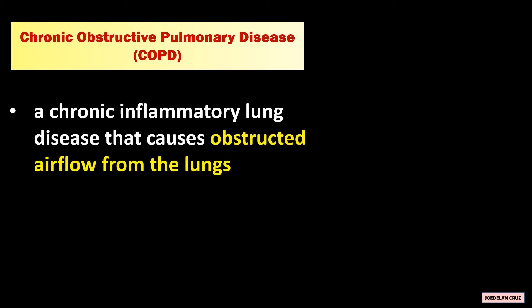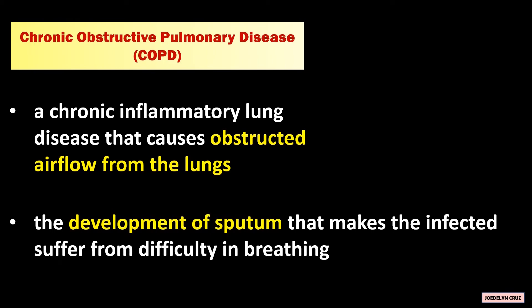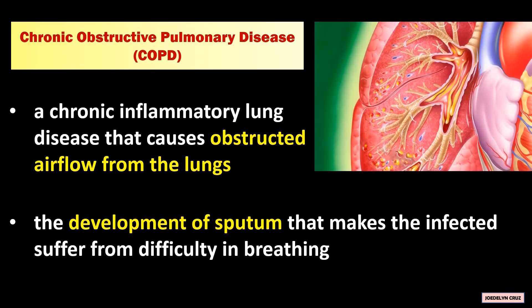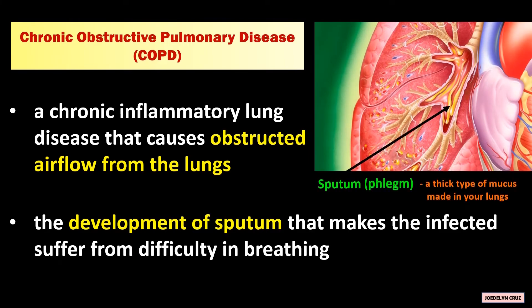Chronic Obstructive Pulmonary Disease is a chronic inflammatory lung disease that causes obstructed airflow from the lungs. It is the development of sputum that makes the infected suffer from difficulty in breathing. Sputum, also known as phlegm, is a thick type of mucus made in your lungs.